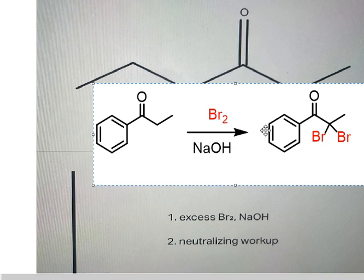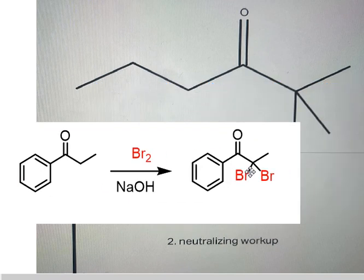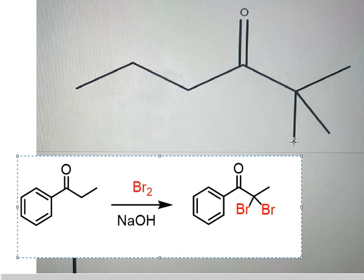Now if we look carefully, on the right we have CH₃, CH₃, and CH₃. That means on this carbon we cannot add more Br here, because all three positions are already occupied.